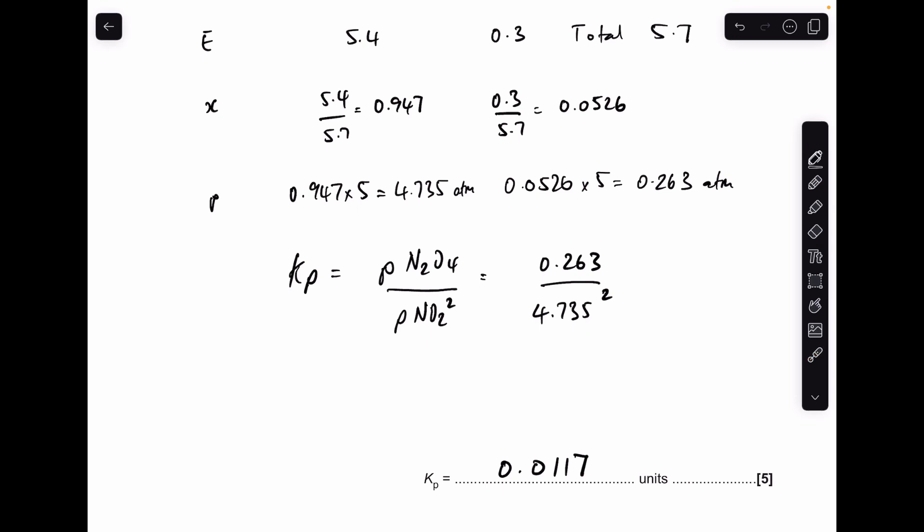So if we think back to the Kp expression, all these partial pressures are in atmospheres. So we've got atm on the top, but we've got atm squared on the bottom. And obviously the atm on the top will cancel with one of the ones on the bottom. And so we're left with atm to the minus 1 for the units.